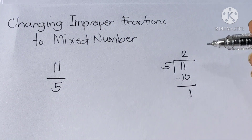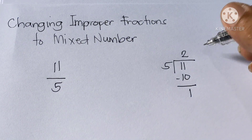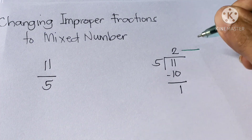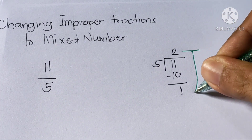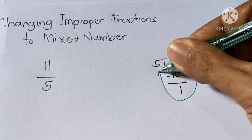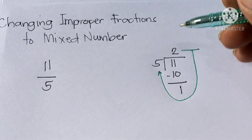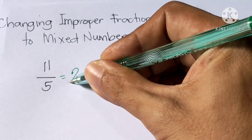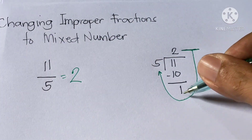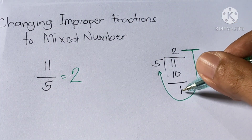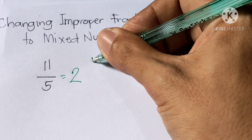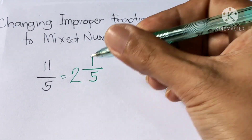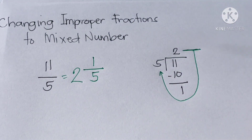So, what will be our answer? Draw a capital letter J. Our first point is 2, which will be the whole number. Then, go down to 1 — that is the remainder, so it will be the numerator. Then, 5 is the denominator. So, the answer is 2 and 1/5.